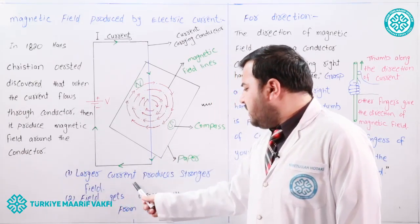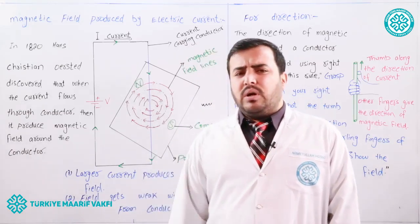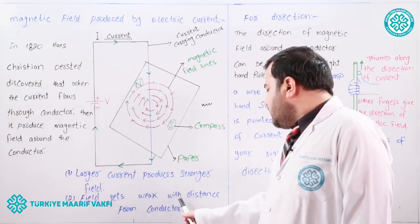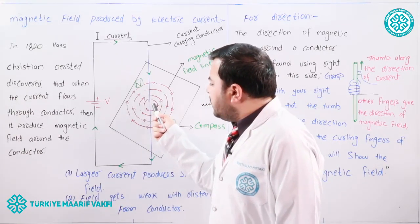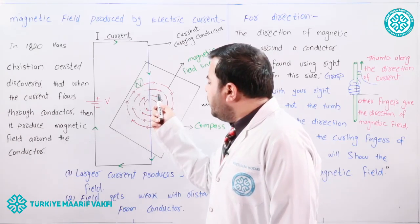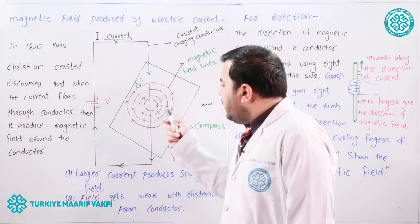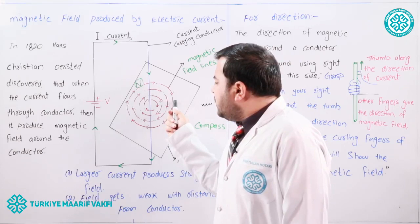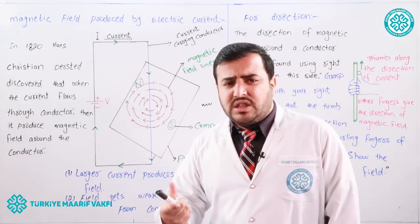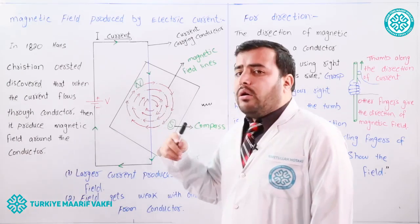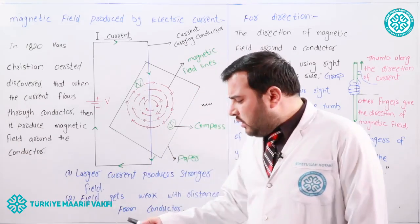So we can say that larger current produces a stronger field, and vice versa. The second result was that the field gets weaker with distance from the conductor. As you can see in this figure, at a point close to the conductor the magnetic field will be stronger, and at a point farther from the conductor the magnetic field will be weaker.